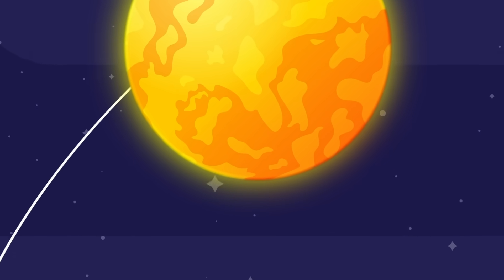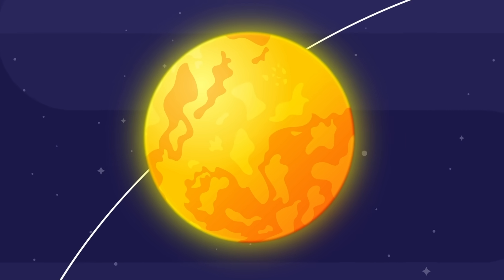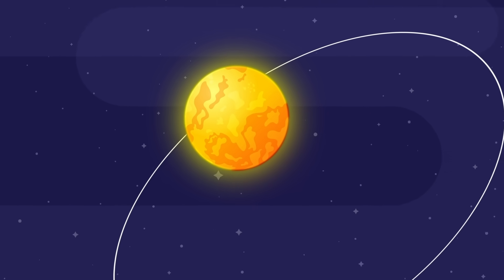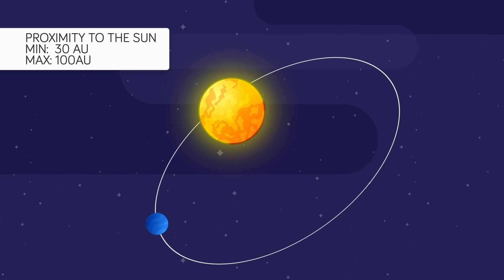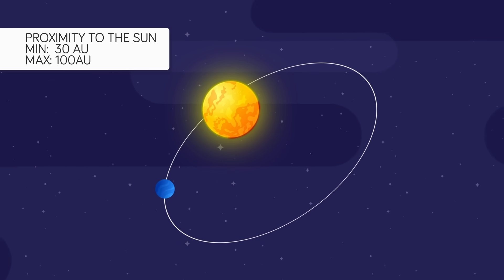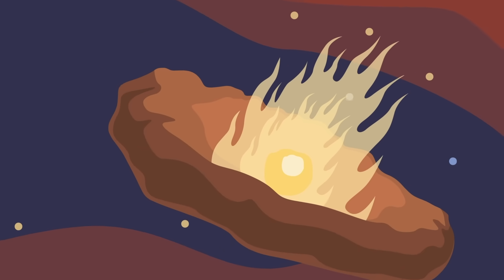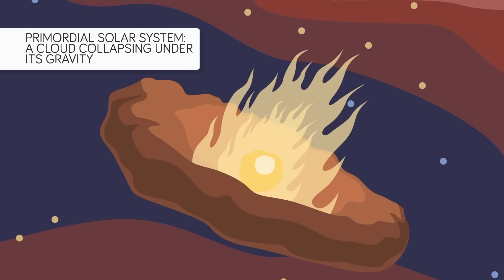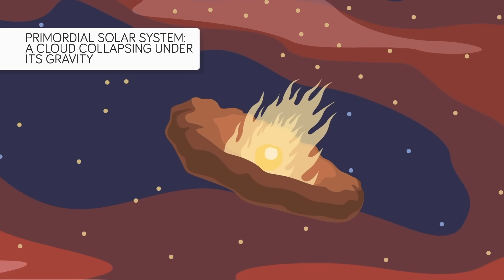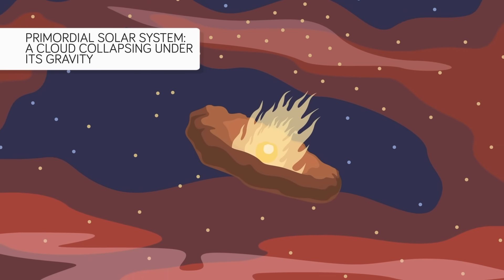These objects have highly tilted or elongated orbits that can bring them in as close as 30 astronomical units to the sun before flinging them back out to over 100 AUs away. This makes them the oldest and the coldest objects in the solar system, which might have preserved all kinds of information about our primordial solar system if we could ever get to one.